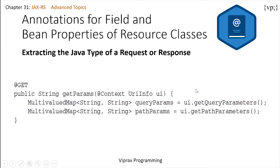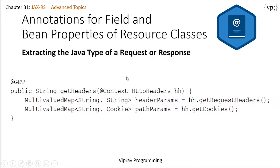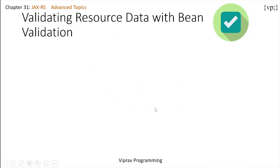Let's take a look at extracting the Java type of a request or response. The following code snippet shows how to obtain a map of query and path parameter names to values. The @Context annotation gets the Java types, and the URIInfo interface provides information about the request URI, which is then used to figure out the query parameters and path parameters. The following code shows how to obtain a map of header and cookie parameter names to values using the HttpHeaders interface.